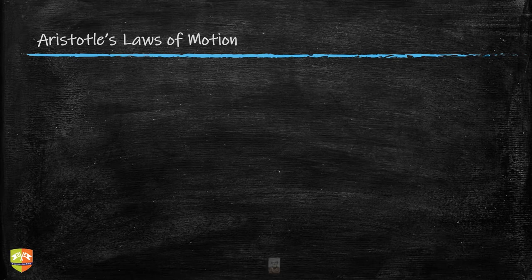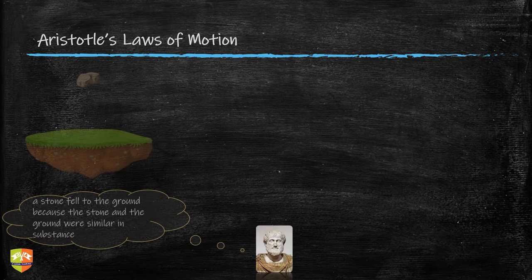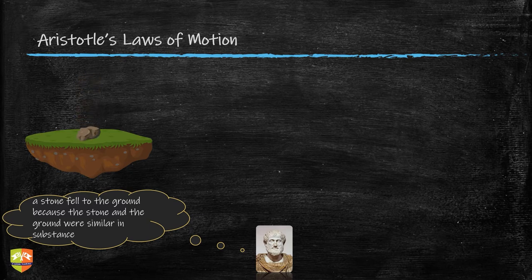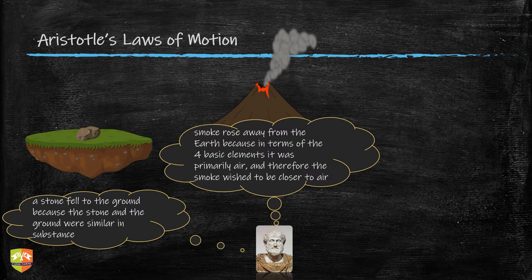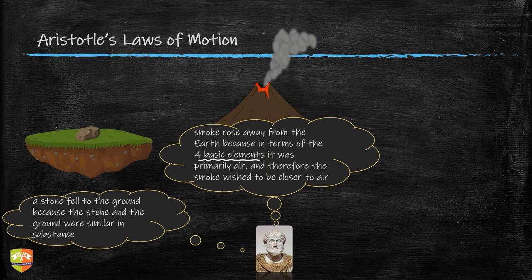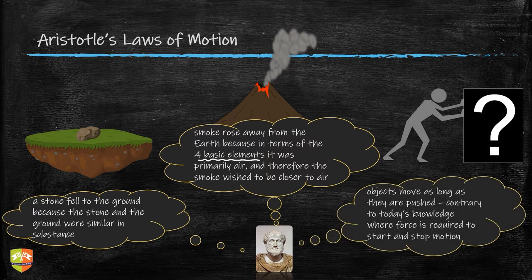Aristotle further said that a stone falls to the ground because the stone and the ground are made of similar material. Similarly, smoke rises away from the earth because smoke is primarily air in terms of the four basic elements — fire, water, air, and earth — and since the substance of smoke and the substance of air are the same, smoke moves toward air. This is essentially saying that 'like attracts like.'